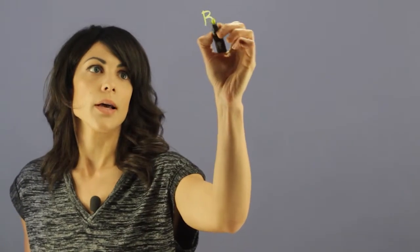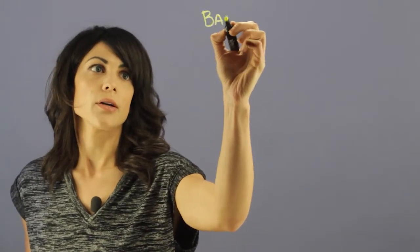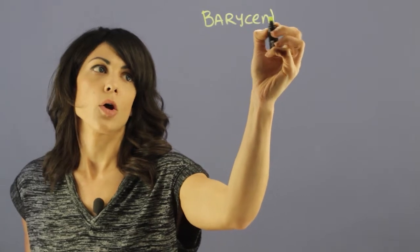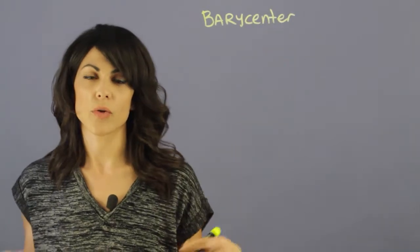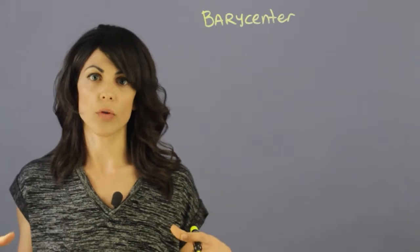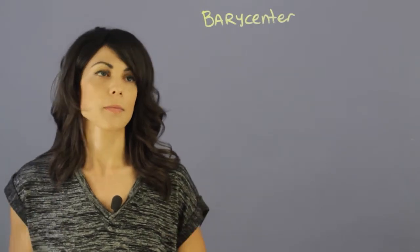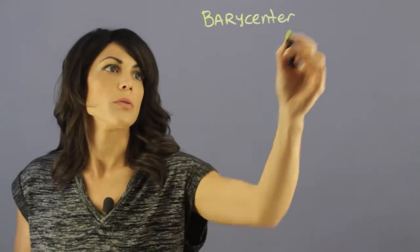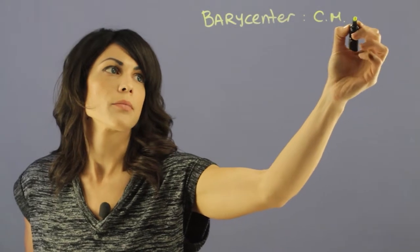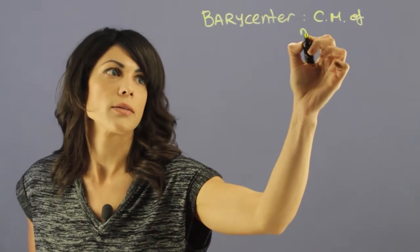When we look at orbits, one of the things that we talk about is the barycenter. The barycenter is the center of mass for two or more objects. So if you have a collection of objects, where is the center of mass of all of those objects? We'll call that the center of mass of many bodies.